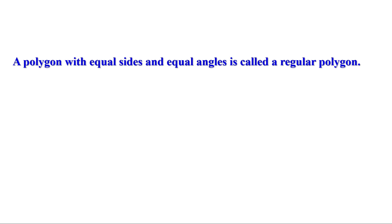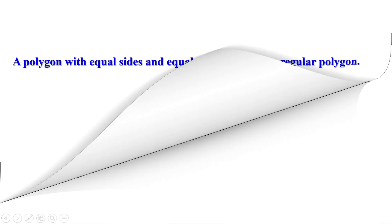So, the equilateral triangle is a regular polygon, the square is a regular polygon, the regular pentagon is a regular polygon, and the regular hexagon is also a regular polygon. All polygons with all sides equal and all angles equal are called regular polygons. Now let us look at some problems.